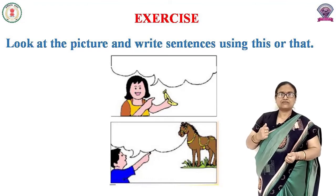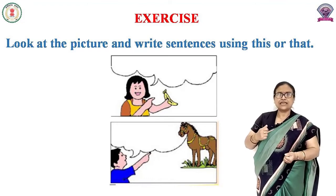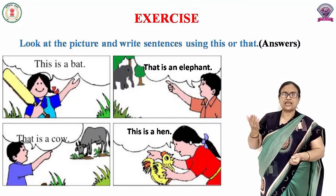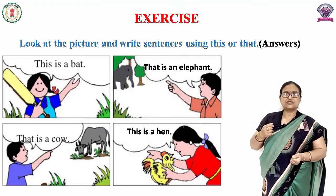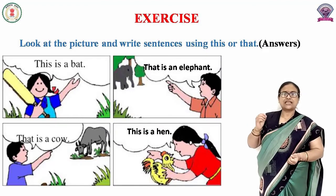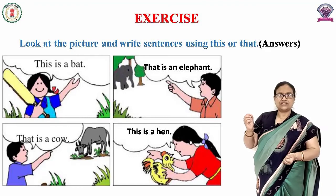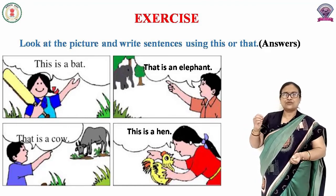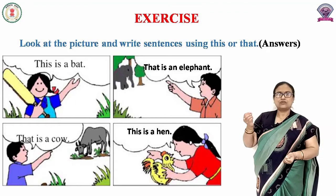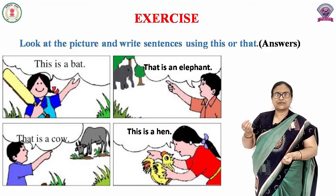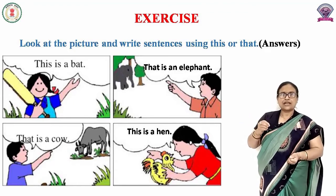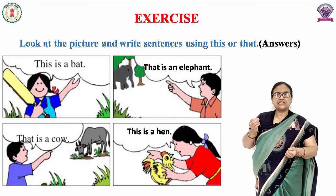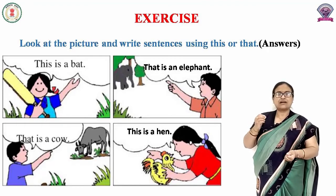Now we will do this one. The elephant is at a distance. So we will say, 'That is an elephant.' Because when the animal is far away, we use 'that'. And for the hen which is near, we will say 'This is a hen.'